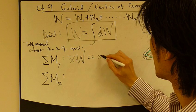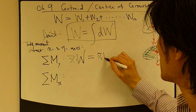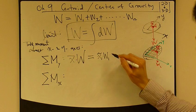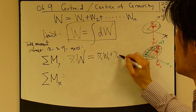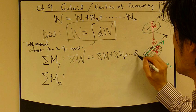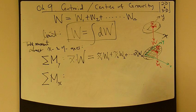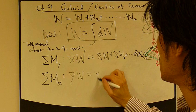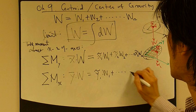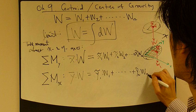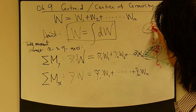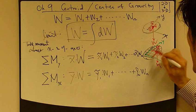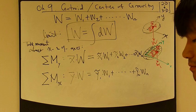So this equals x-tilde-1 times w1 — that's the moment of that tiny piece about the y-axis — plus x-tilde-2 times w2, and so on, until you sum up everything. Same thing for the x-axis: y-bar times W equals y-tilde-1 times w1 plus y-tilde-2 times w2, and so on through wn. Here y-bar is the y-coordinate of the center of gravity, and y-tilde is the y-coordinate of the individual elements.